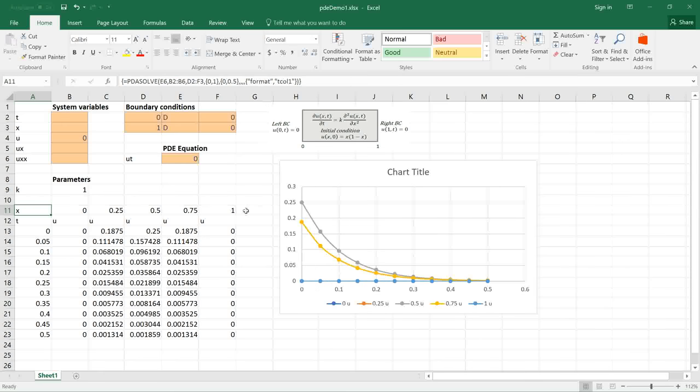If I run again you can see here that the X and T columns have been swapped and the plot has been automatically adjusted to reflect a transient plot of U at various spatial points.